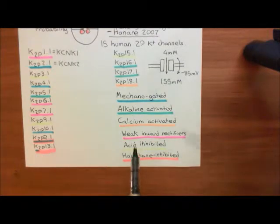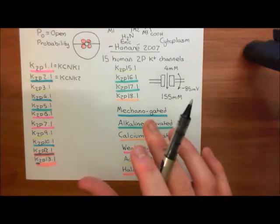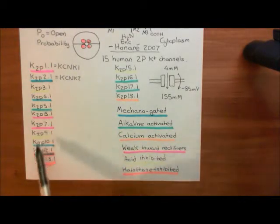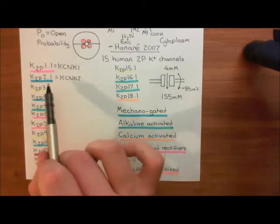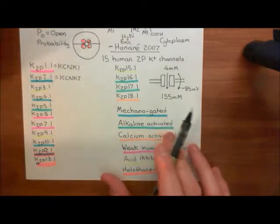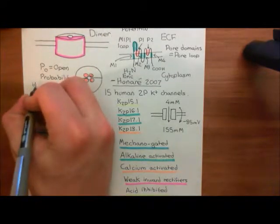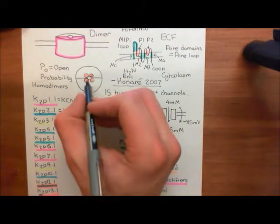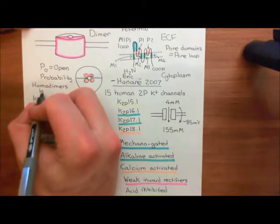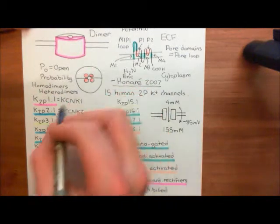So those are the different properties of the different two pore-domain potassium channels. The other thing I want to discuss before coming on to their other names is that these channel subunits are all going to form dimers. There are 15 different channel subunits, and the question is how do they join together? Mainly the dimers you find are homodimers, though we're getting more evidence that heterodimers also exist, containing two different subunits.